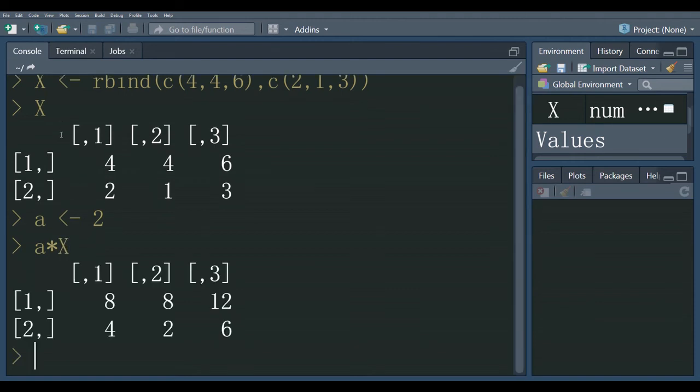Here you can see, each element of the matrix is multiplied by the given scalar. 4 multiplied by 2 equals 8, then 8, 12, and so on. The scalar is multiplied with each element of the matrix.